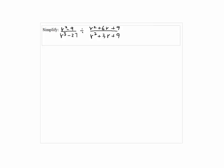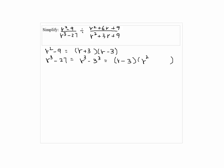Simplify: x squared minus 9 over x cubed minus 27, divided by r squared plus 6r plus 9 divided by r squared plus 3r plus 9. First we have to factor each trinomial and binomial. r squared minus 9 is factored as r plus 3 times r minus 3. r cubed minus 27 is written as r cubed minus 3 cubed, which by the cubic formula gives us r minus 3 times r squared plus 3r plus 9.